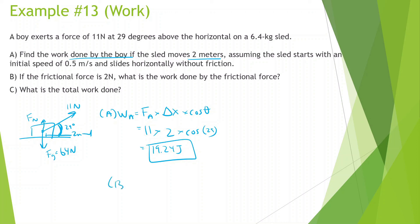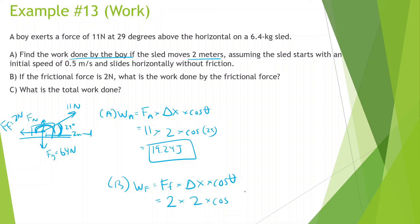Part B: if the frictional force is 2 Newtons, what is the work done by the frictional force? The sled moves to the right but force of friction goes to the left, so the angle between them is 180 degrees. Work done by friction equals 2 times 2 times cosine of 180, which equals negative 4 Joules.